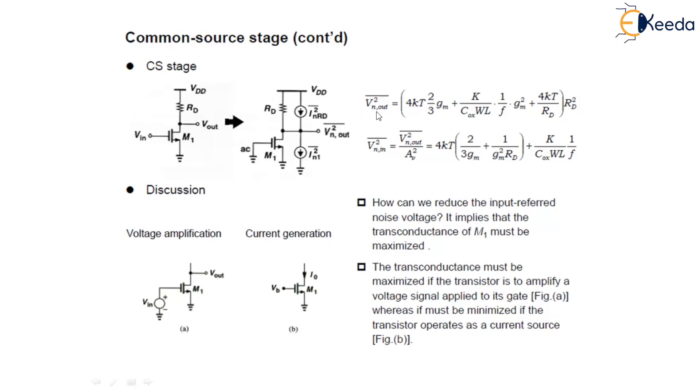You can see here, in the case of this, when we are using this Vn, the noise output voltage, it is directly proportional to transconductance. So this transconductance must be minimized to decrease this output-referred noise voltage. And this must be inversely proportional to decrease this input-referred noise voltage, we must increase this transconductance. So this is about the input-referred noise voltage in the common source stage.